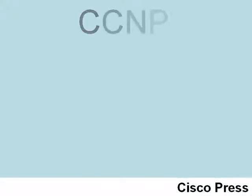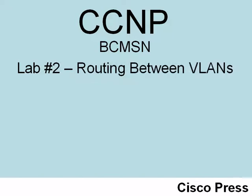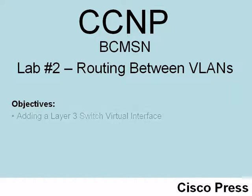Welcome to BCMSN lab number two. In this lab we are going to configure a multi-layer switch to perform routing, making forwarding decisions based on layer 3 IP address information just like a router does. We have a couple of different approaches we can select from, and one approach is to create a virtual SVI — a switch virtual interface.